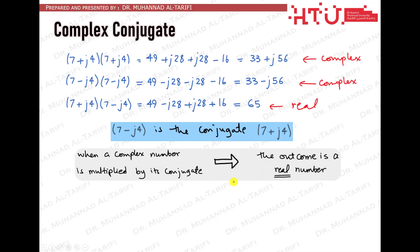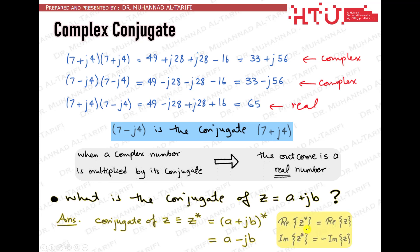Finding the conjugate of a complex number is straightforward. Just replace j with a minus j. So if z is a complex number a plus jb, its conjugate is simply a minus jb. The real parts are identical, and the imaginary parts have the same magnitude but opposite sign. Notice here the notation of the conjugate operation as a star at the superscript position.